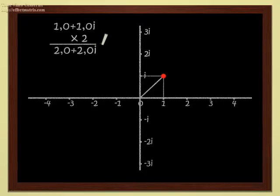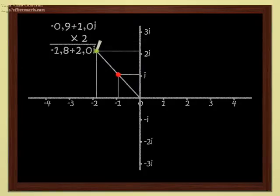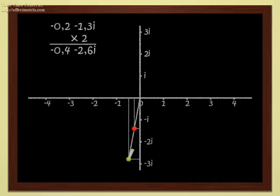2 times 1 plus 2i gives 2 plus 4i. Geometrically, multiplying by 2 is easy. It's just scaling up by a factor of 2. If we double the red point, we get the green point.